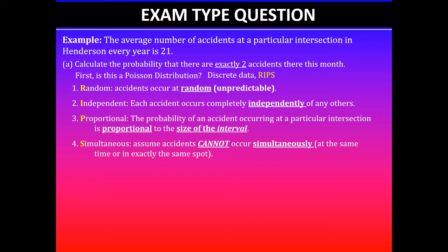So we're asked to find the probability that there are exactly two accidents, so the x value is 2. In this case the average is given as 21 accidents every year and the question is asking this month, so the mean number of accidents per month is what we need to calculate.